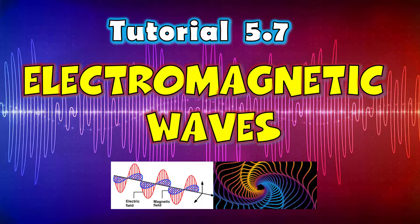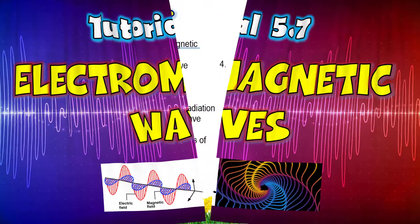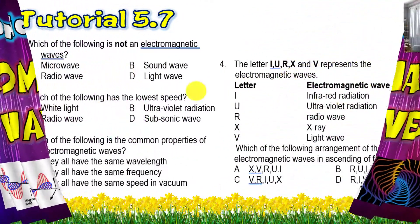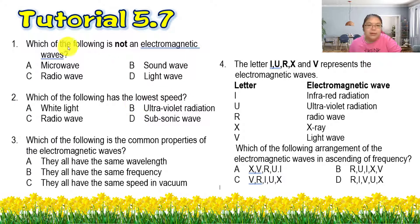Hello students, we continue again with Tutorial 5.7 on electromagnetic waves. Let's see the first question. They ask you which one is not an electromagnetic wave. So from here we find that sound wave, of course, is not related. The sound speed is also not like light, so that means it's not an EM wave.